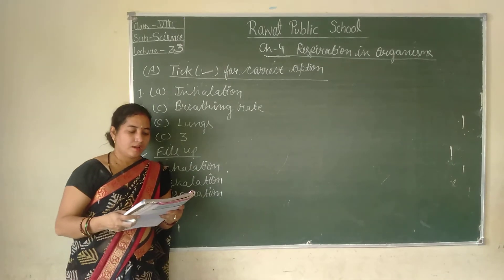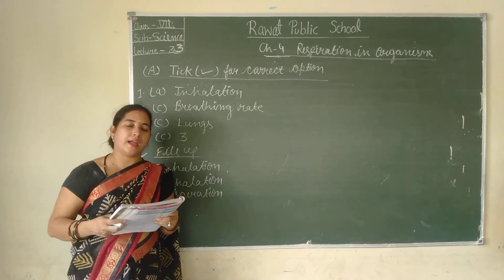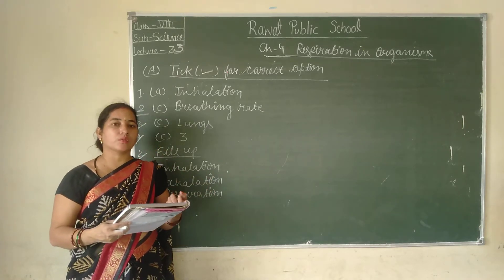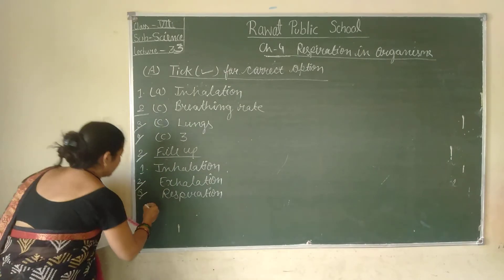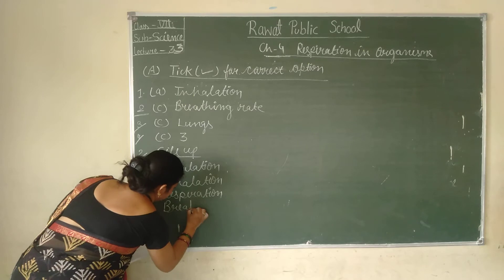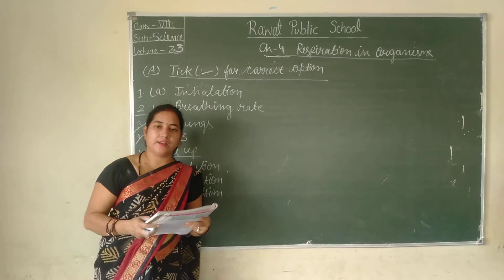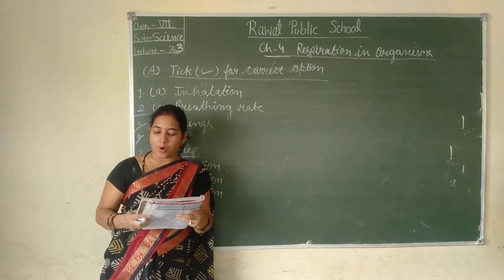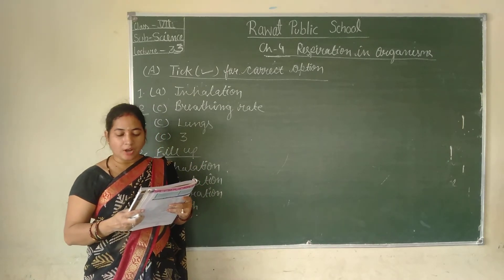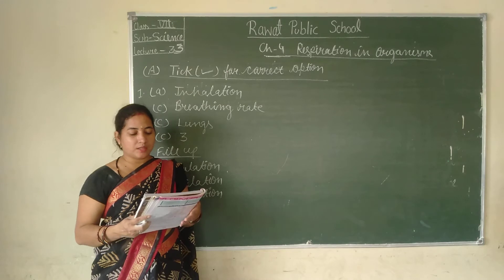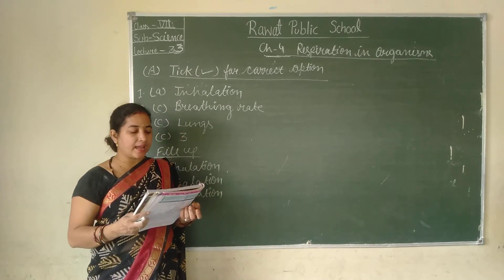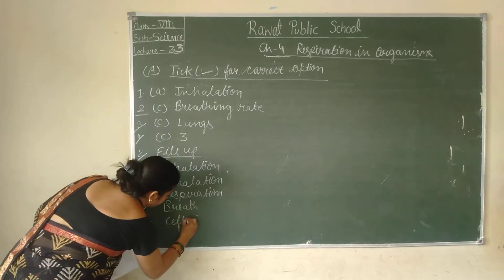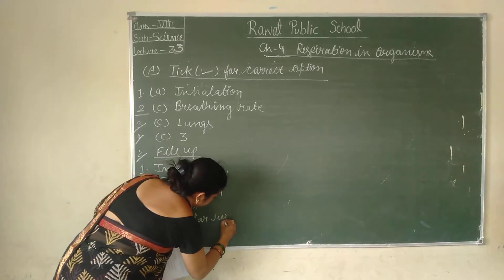The fourth question is: one inhalation and one exhalation together make — the answer is a breath. The fifth question is: the process of taking in oxygen and using it for the breakdown of food to release energy is called — the answer is cellular respiration.